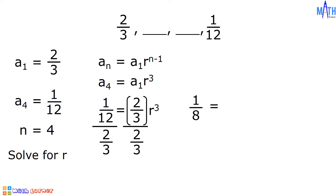On the right side, since 2/3 divided by 2/3 is equal to 1, and 1 times r cubed is equal to r cubed, then we have r cubed on the right side.